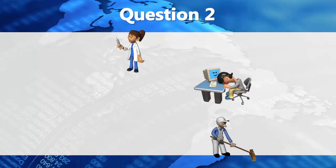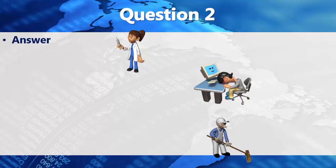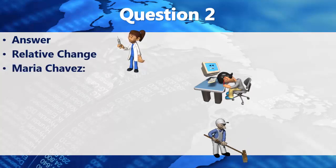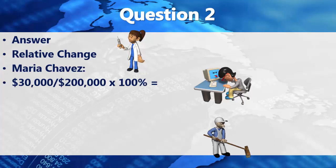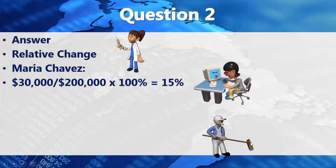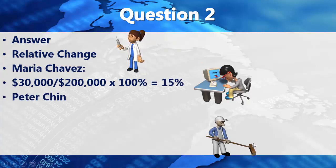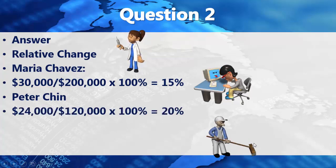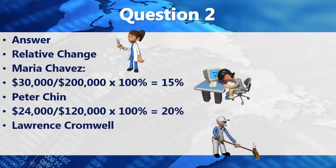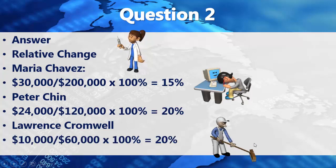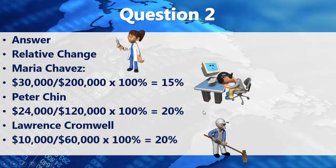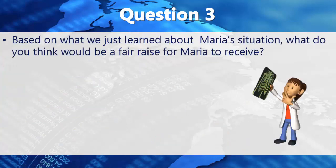Returning to the PowerPoint to review our calculations: Maria Chavez's relative change was 15%, Peter Chin's relative change was 20%, and Lawrence Cromwell's was 20%. So she felt a little bit cheated. Based on what we just learned about Maria's situation, what would be a fair raise for Maria to receive?